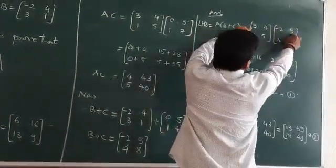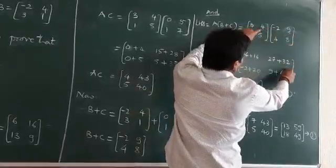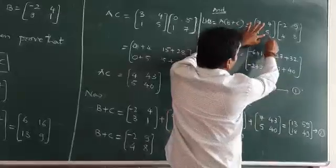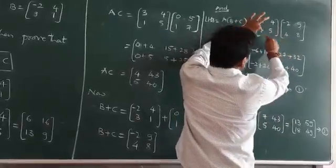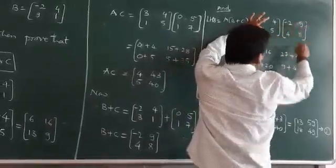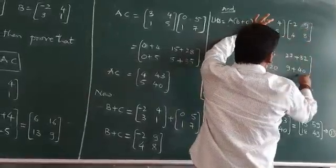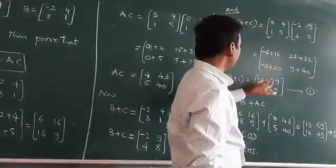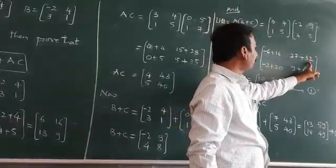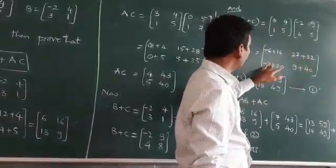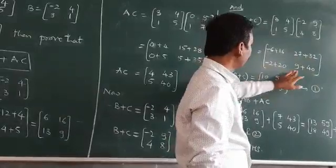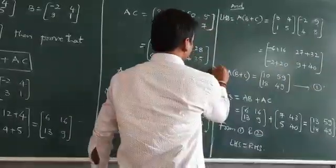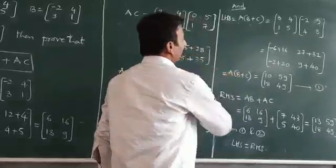And again, 3 into 9 is 27, 4 into 8 is 32. Take the second row, first column: 1 into -2 is -2, 5 into 4 is 20. Second row, second column: 1 into 9 is 9, 5 into 8 is 40. Here, -6 plus 16 is 10, 27 plus 32 is 59. -2 plus 20 is 18, 9 plus 40 is 49. As I got LHS, this is my LHS.